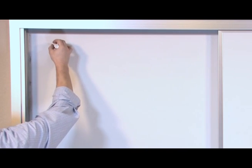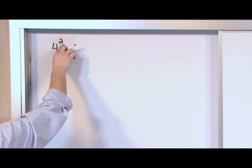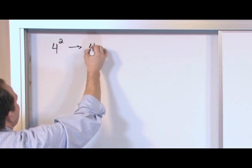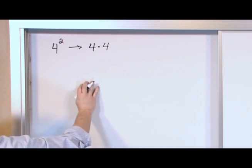If you see something in a book that looks like this, four with a two on the top, this is an exponent. The two is what we call an exponent. And it's a shorthand way of writing this, four times, the dot is times, four.